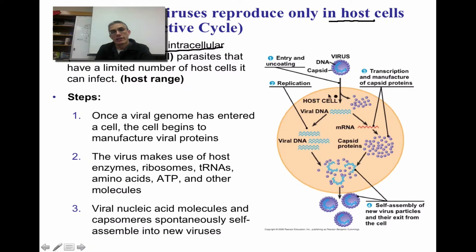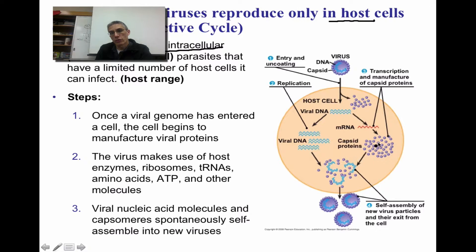The virus then injects its DNA or RNA genetic material inside of the host. The second step is going to be the replication of that particular DNA or RNA. Sometimes that DNA or RNA will actually be incorporated within the DNA of the host cell. Step three represents the transcription and the manufacture of those capsid proteins being used to build that capsid or protein coat of the virus. All of this is under the direction of the cell — the DNA injected into the cell is directing the cell to build these various parts.